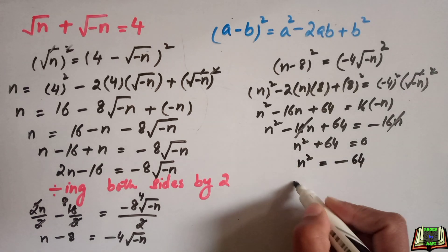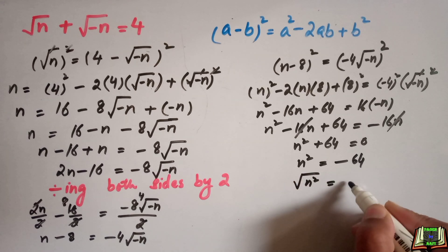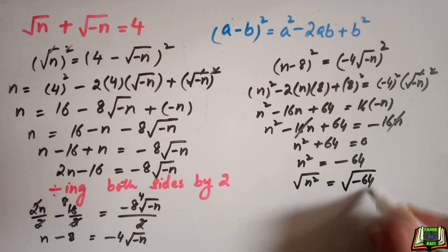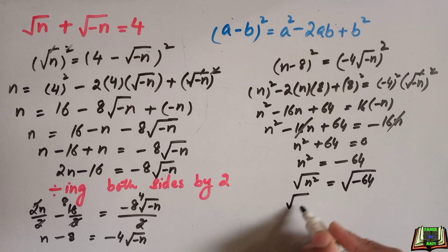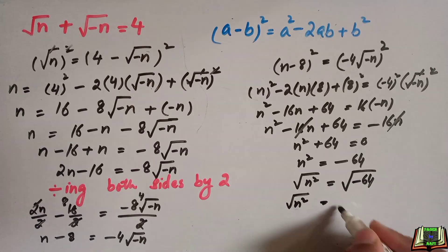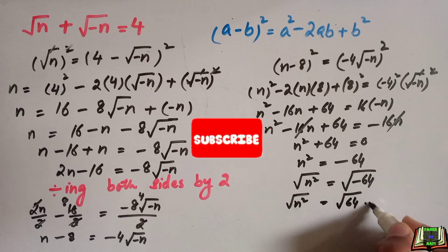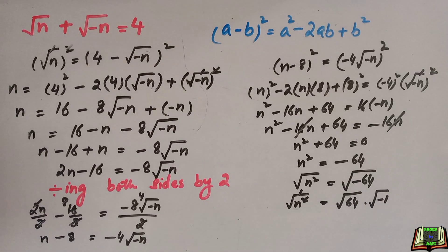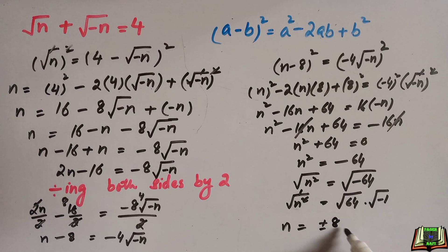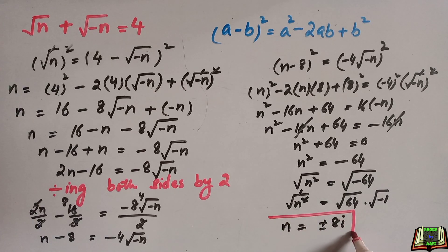We will take the square root of this equation on both sides. Square root of n squared equals square root of 64 times square root of minus 1. Square root of n squared is equal to n, and square root of 64 is equal to plus or minus 8, and square root of minus 1 is iota. So we got the value of n, which is n equals plus or minus 8 iota. I hope all the steps are clear.